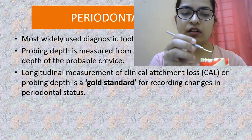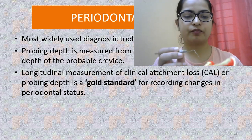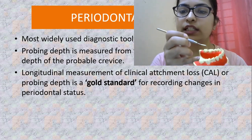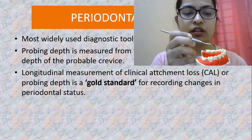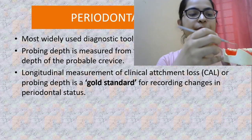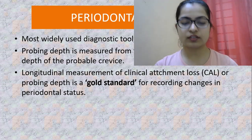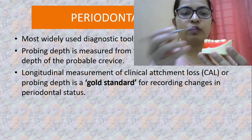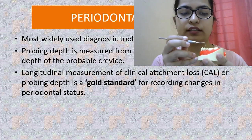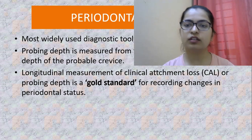The six probing surfaces are distobuccal, buccal, mesiobuccal, distolingual, lingual, and mesiolingual, and in all cases the probe should be parallel to the tooth. This is walking the probe, done mostly for sulcus depth. The other technique is running the probe — where the probe is placed in the sulcus and gently run around it — which is mainly done for detecting bleeding on probing. These are the two ways we use periodontal probing.